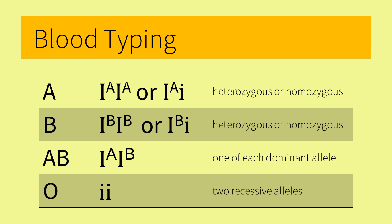So those with A and B blood types can be homozygous or heterozygous A or B. But those with AB blood type have one of each of the dominant alleles. And a person with blood type O would have two recessive alleles.